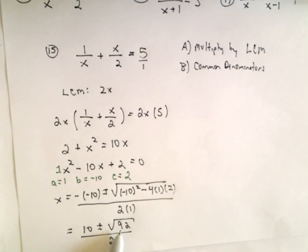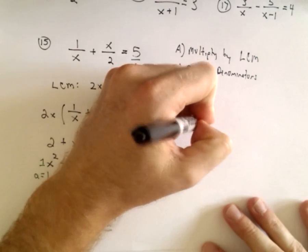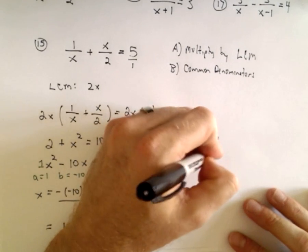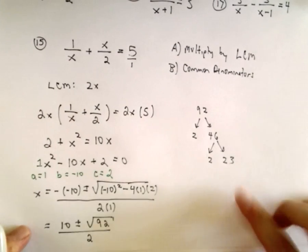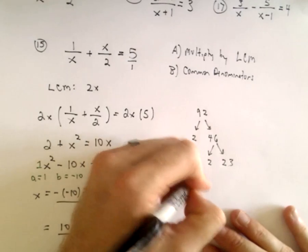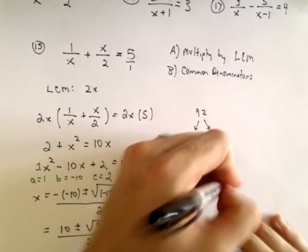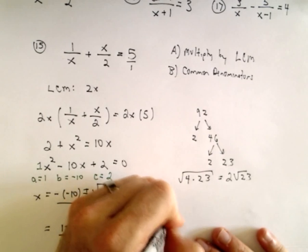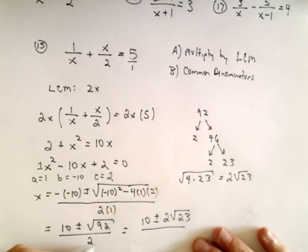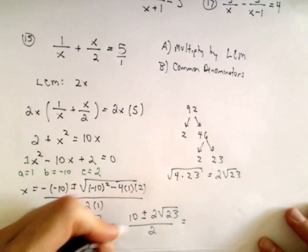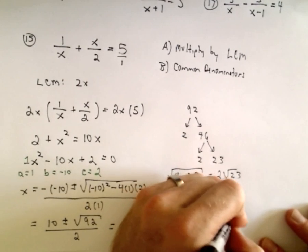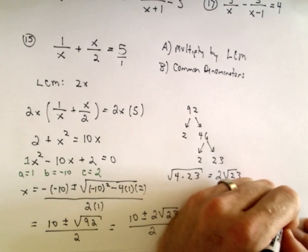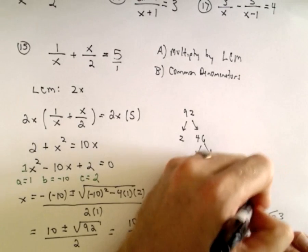Does the square root of 92 simplify? We can make a little factor tree here. We've got 2 times 46, 2 times 46 will give us 92. 46 factors again as 2 and 23. 23 is a prime, so we can write 92 as 4 times 23. If we take the square root of the 4, we'll get 2 times the square root of 23. I'm going to rewrite this as 10 plus or minus the square root of 2 multiplied by the square root of 23 over 2. Now you can split this up, that's 10 over 2 plus or minus the square root of 2 times the square root of 23 over 2. 10 over 2 is 5, and the 2's will cancel, we'll be left with the square root of 23.